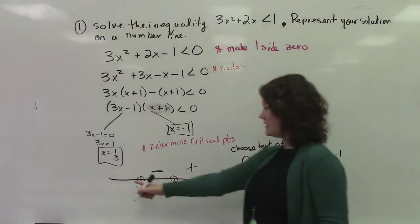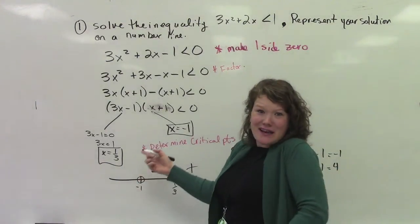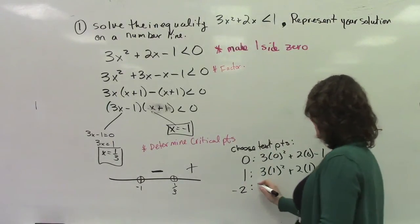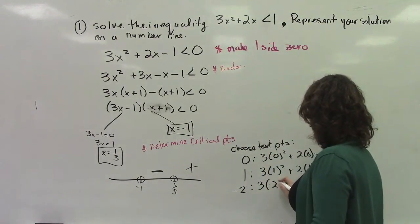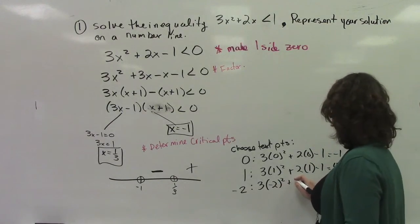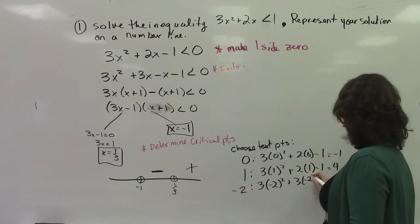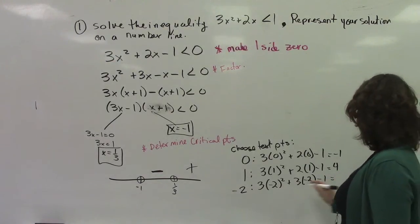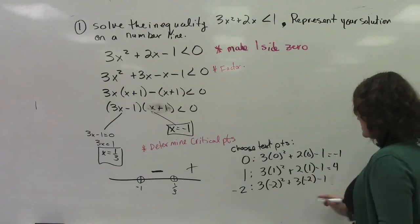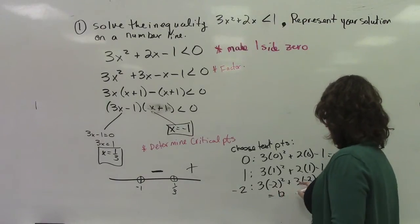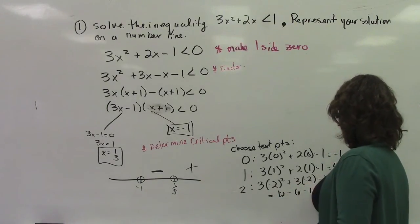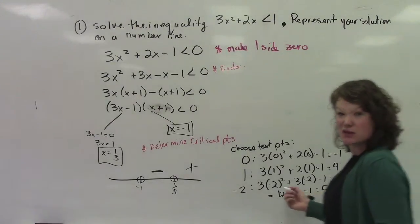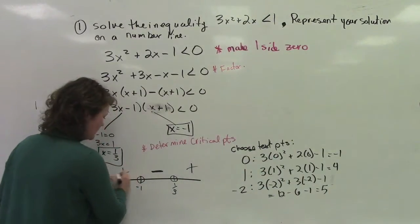The test point on this side, the easiest one for me would be negative 2. Even though that's getting a little bit more complicated. 3 times negative 2 squared plus 3 times negative 2 minus 1 equals... This is going to be... I'm going to take an extra step with this. So it's going to be 12 minus 6 minus 1. That's just 5. It's positive. So this is positive.